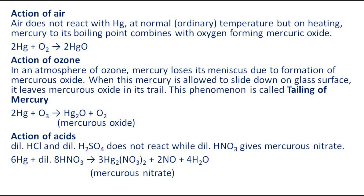Action of ozone: In an atmosphere of ozone, mercury loses its meniscus due to the formation of mercurous oxide. When this mercury is allowed to slide down on a glass surface, it leaves mercurous oxide in its trail. This phenomenon is called tailing of mercury.